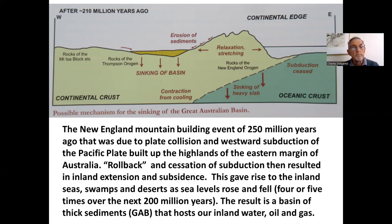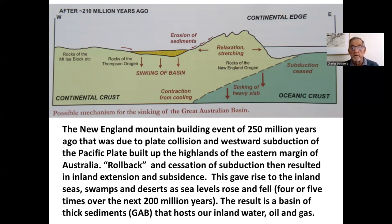The basement blocks to those basins were the Mount Isa Mesoproterozoic, very old rocks, and the Thomson orogen of about 500 million years, which underlies much of the Queensland area. In the east of Australia there was a younger orogen, the New England orogen, which only ceased at the close of the Paleozoic, about 250 million years ago.